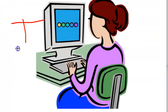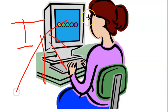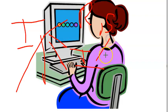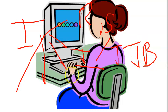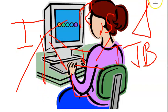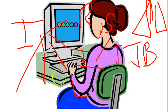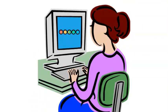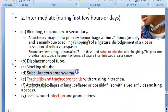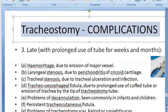To summarize the intermediate complications: reactionary hemorrhage, secondary hemorrhage due to infection, tracheitis, tracheobronchitis, atelectasis, lung abscess, tube displacement, tube blockage, subcutaneous emphysema, local infection, and granulations.